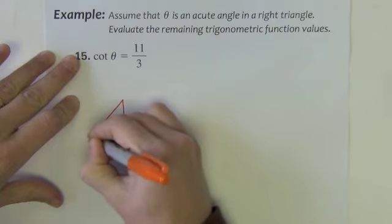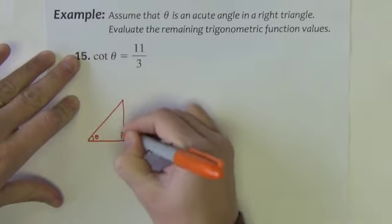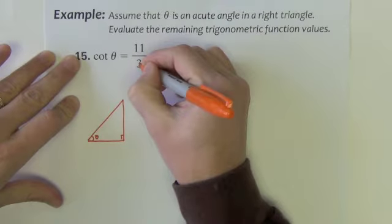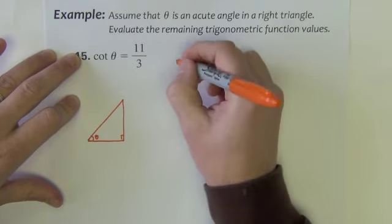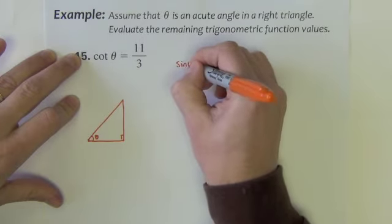These don't have to be drawn to scale. I have cotangent which is 11 over 3. Now cotangent is tangent's reciprocal. Let me just kind of set all these up.